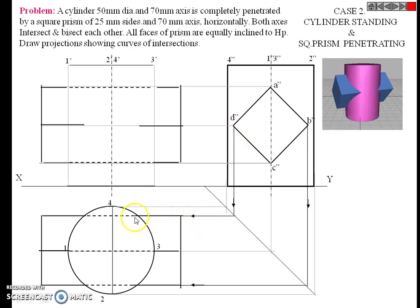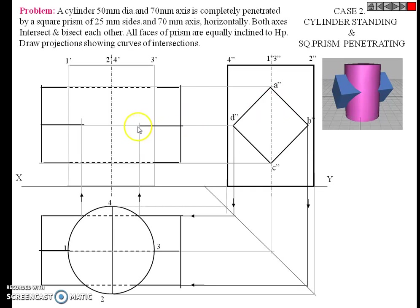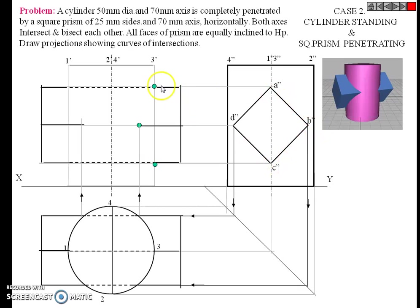The D-dash edge is inserted into the cylinder up to this point, so this line is dark. Name the points: A, B, C, and D. When the observer is from this side, A, B, C are visible and A, D, C are invisible — A, D, C is on the back side and therefore invisible.